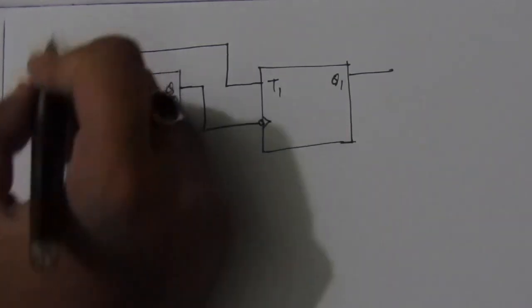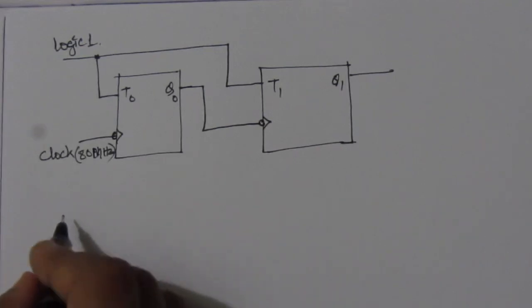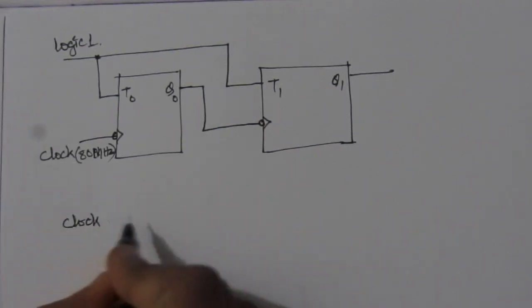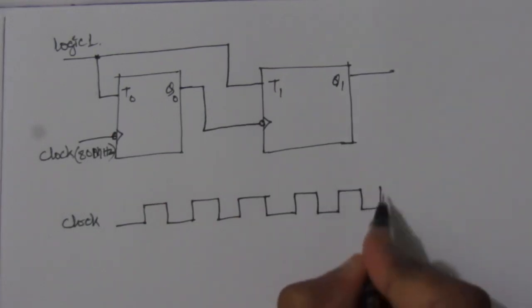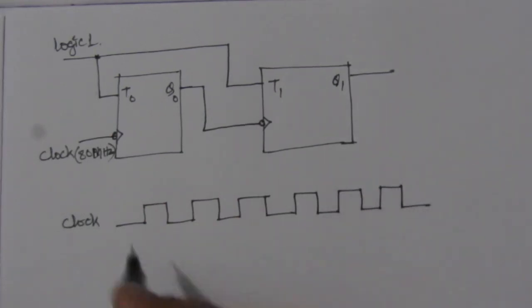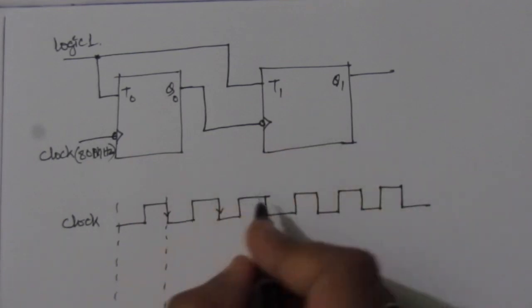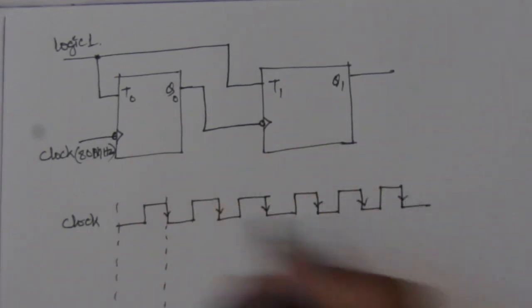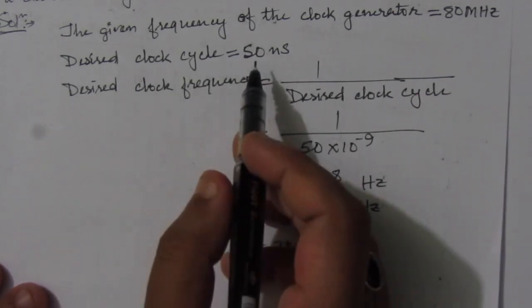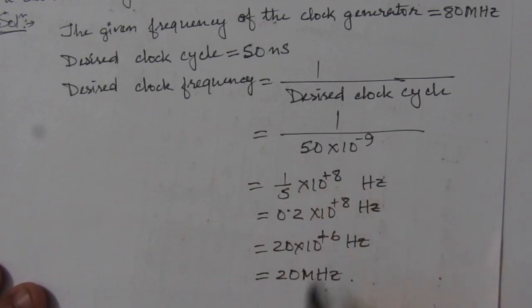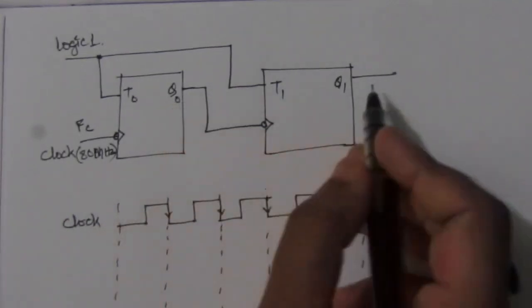The given frequency is 80 MHz and we need a clock cycle of 50 nanoseconds, which corresponds to 20 MHz — meaning we have to divide by 4. We apply logic 1 to both T inputs, and initially reset both flip-flops so that Q0 = 0 and Q1 = 0. Now let us observe the Q0 and Q1 output pulses.